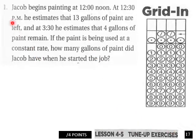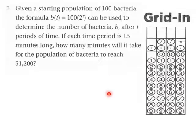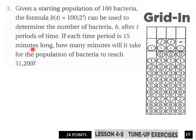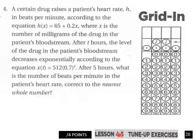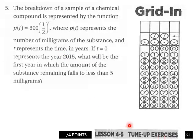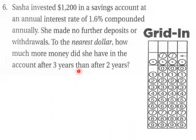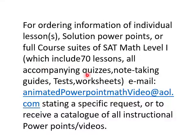Going into grid-ins: page 17 on your worksheets has grid-in problem number 1, four points. Grid-in problem number 2 is on page 18. Page 19 has problems 3 and 4. Page 20 has grid-in problem number 5 — four points — and page 21 has another exponential question, grid-in problem number 6, which is a finance problem.